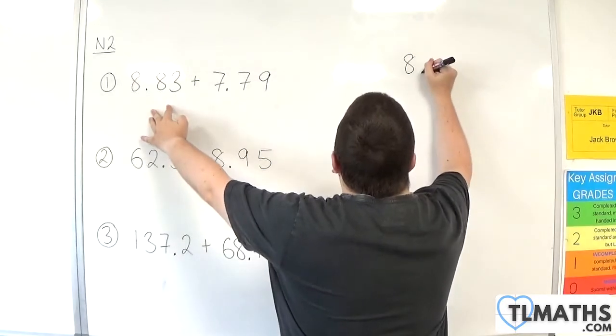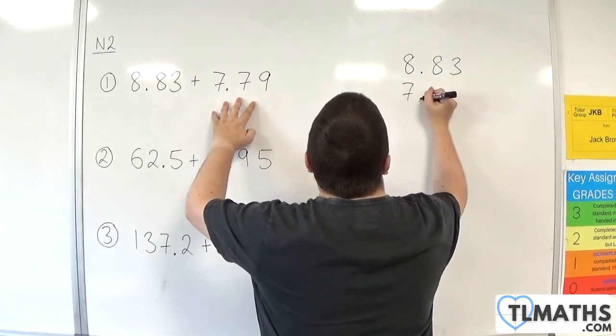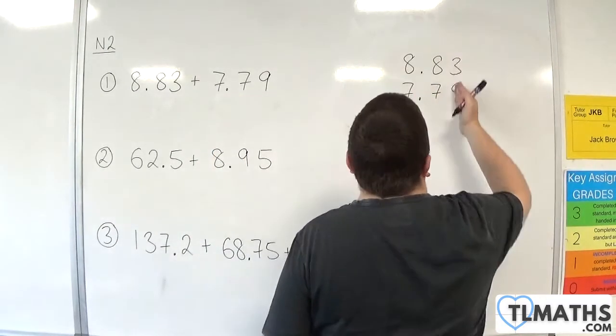8.83 plus 7.79. You just need to make sure that the decimal points line up, and that lines up your units, tenths, and hundredths column.